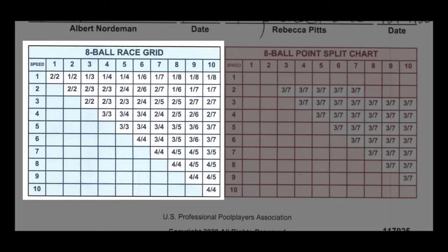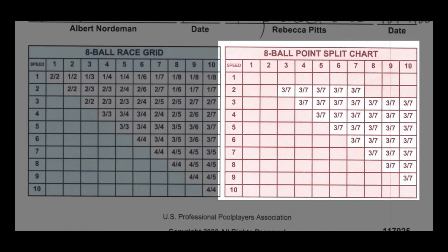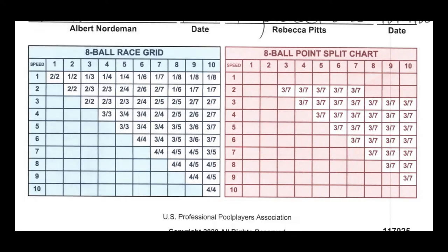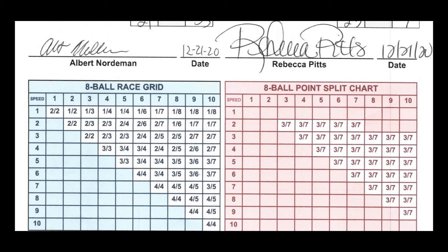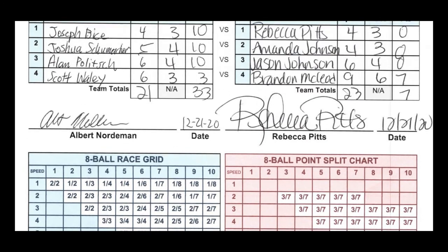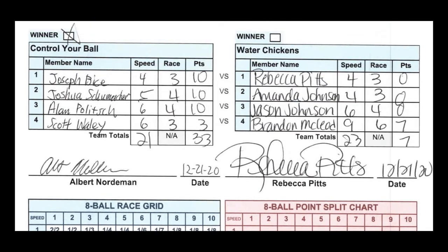So now that you know how our race grid works and where to find them, let's focus on match points and point splitting. Every match played in the UPA is worth 10 points.